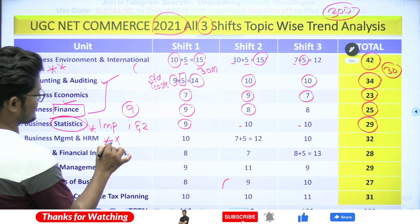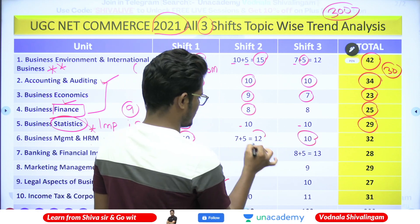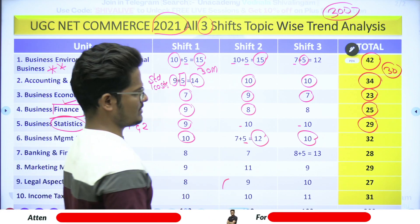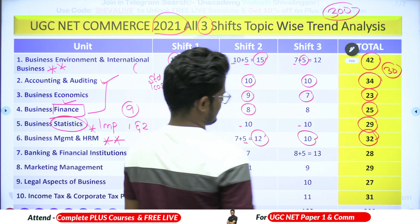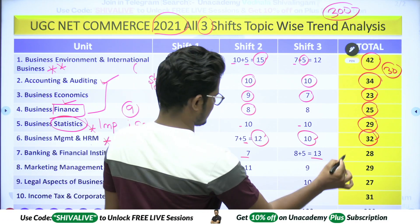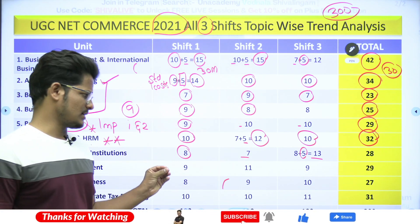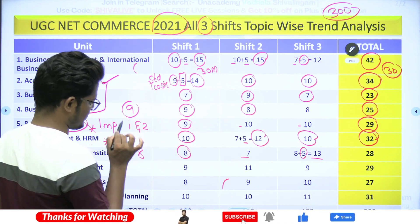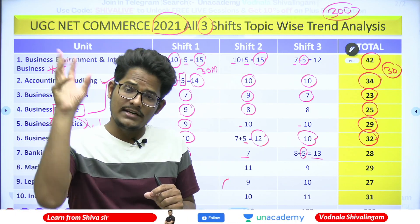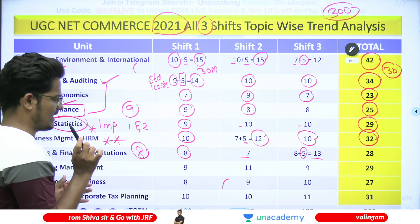BM and HRM saw 10 questions in Shift 1, 10 in Shift 2, and 12 in Shift 3 (including 7 individual plus 5 Reading Comprehension) — totaling 32 questions. Banking and Financial Institutions had 8 questions in Shift 1, 7 in Shift 2, and 13 in Shift 3 (including 5 RC-based questions). Previous trends showed 14, 13, and 12 questions respectively — so you cannot take Banking lightly.